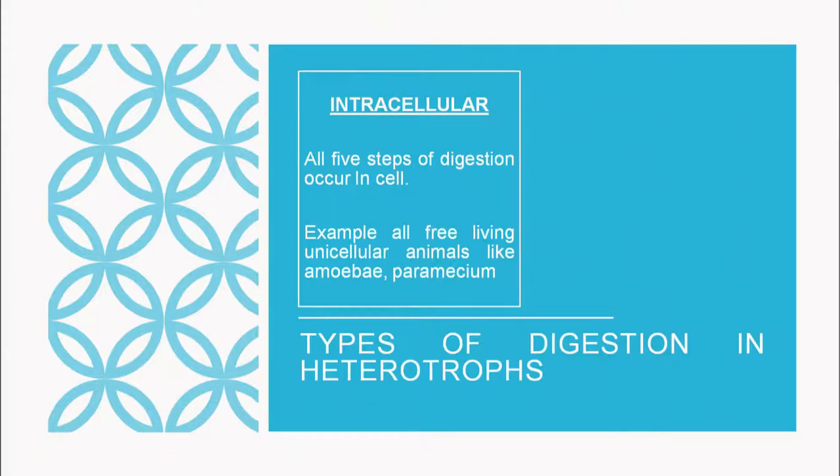Examples of intracellular digestion are amoeba and paramecium, which are protozoans. Any free-living unicellular organism shows intracellular digestion because they are unicellular and all life processes are carried out by that single cell.